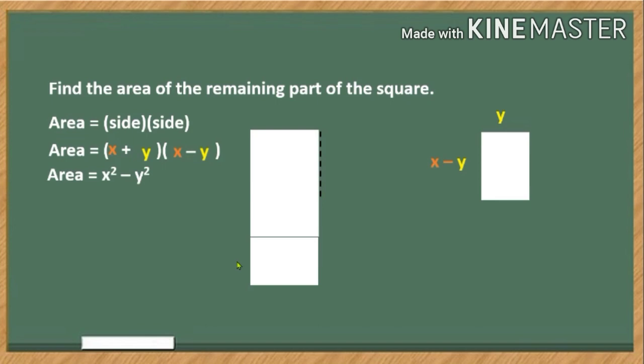So the area now can be expressed as the difference of two squares. If you can still remember, this is a special product, and we call this the sum and difference of two terms. And the product of this special product is called the difference of two squares.